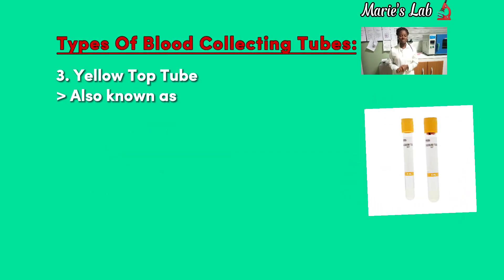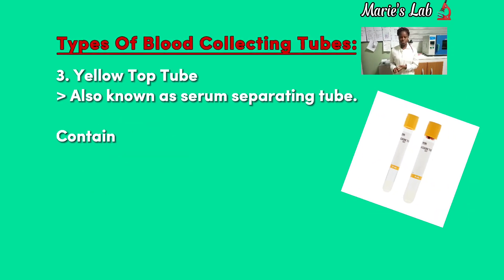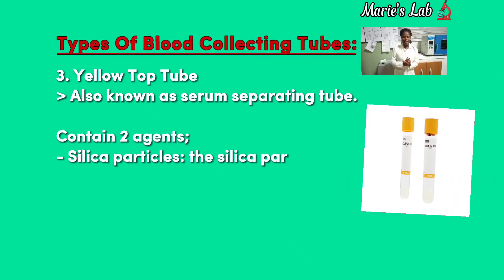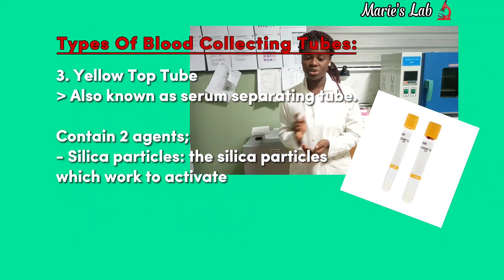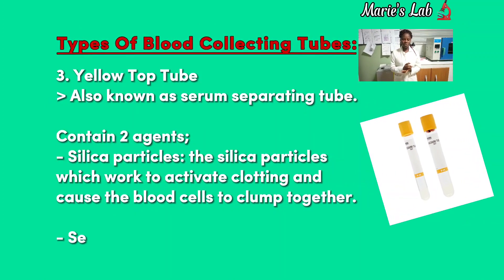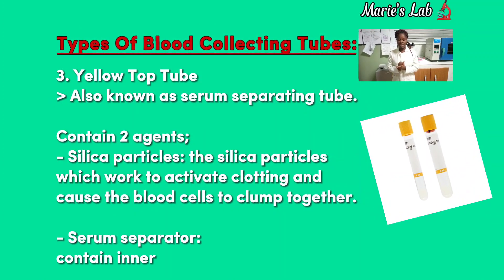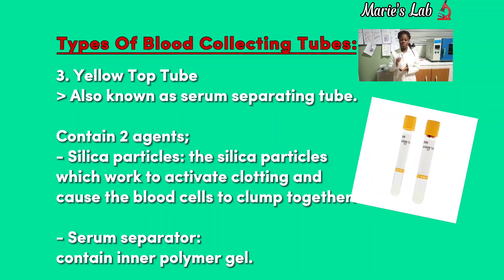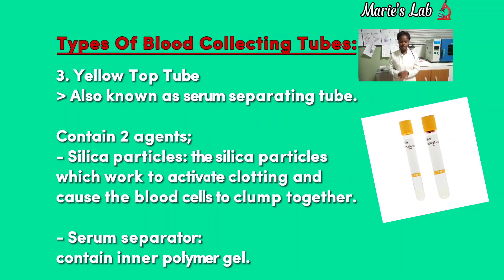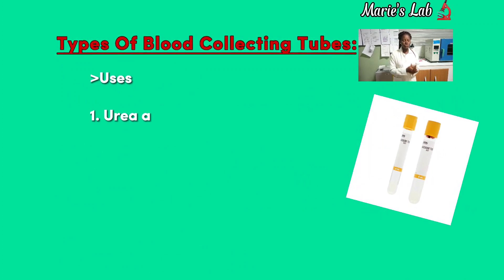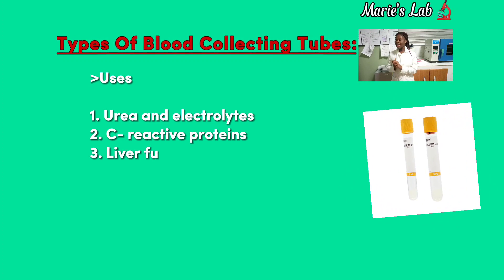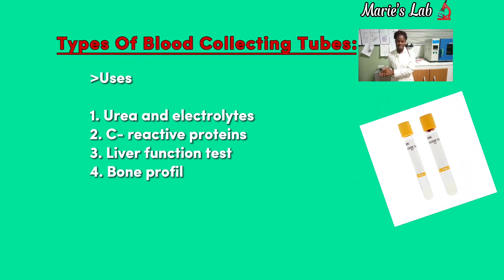Number 3: Gold top tube, also known as serum separating tube, contains two agents: silica particles, which work to activate clotting and cause blood cells to clump together, and also a serum separator gel. Uses of these tubes: urea and electrolytes, liver function tests, and hormone profiles including tumor markers and drug levels.